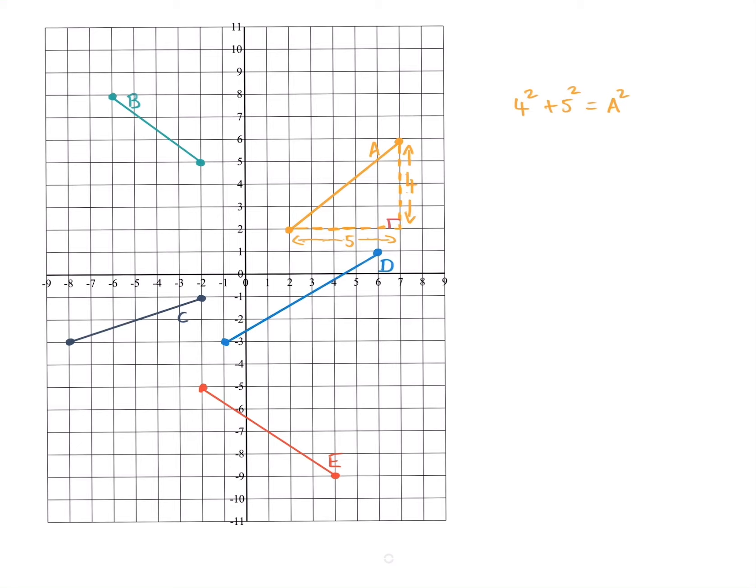So we did this before on Monday. If you're stuck, you can go back over that video. But hopefully this will explain it again. So four squared is four multiplied by four, which is 16. Five squared is five multiplied by five, which is 25, equals A squared. We leave A squared just as it is.